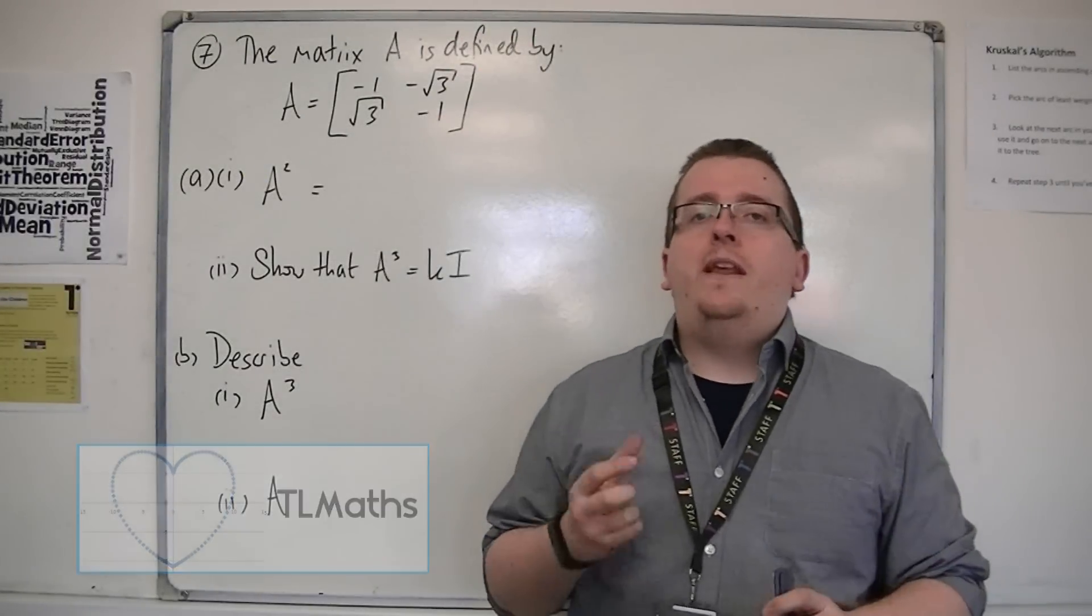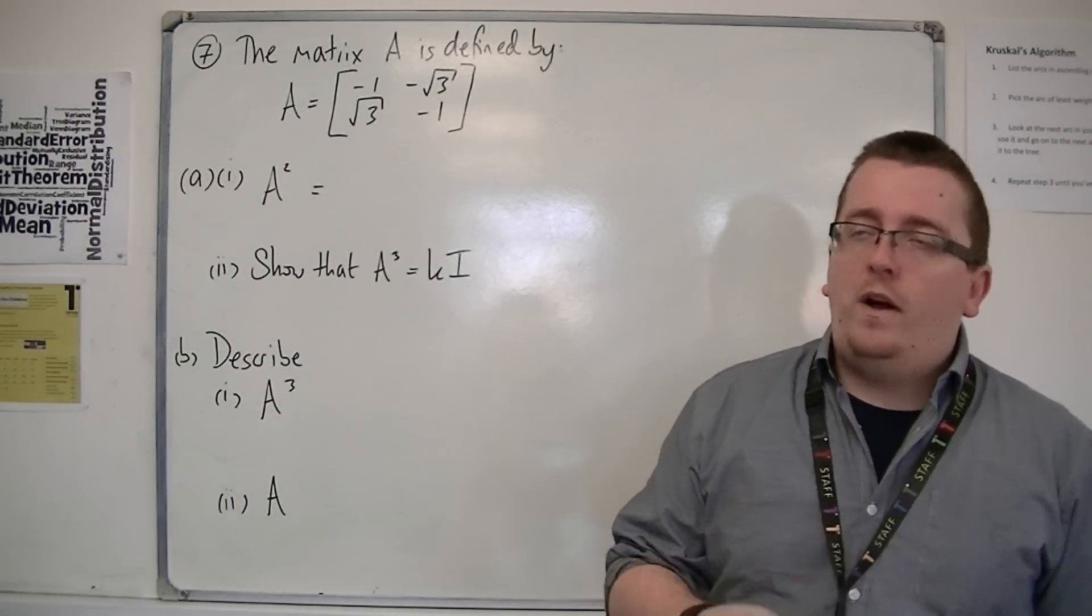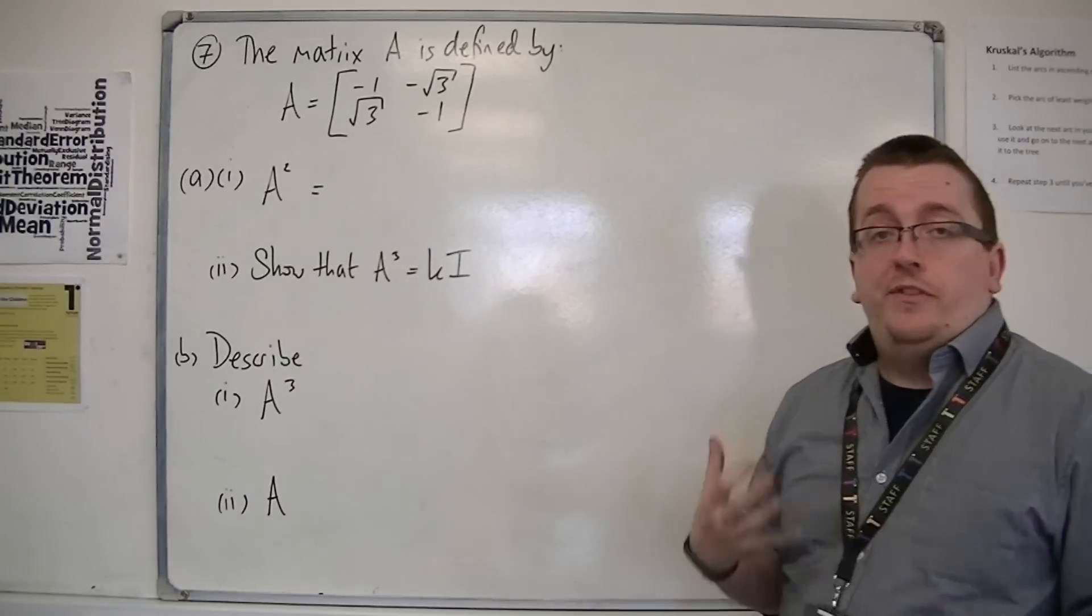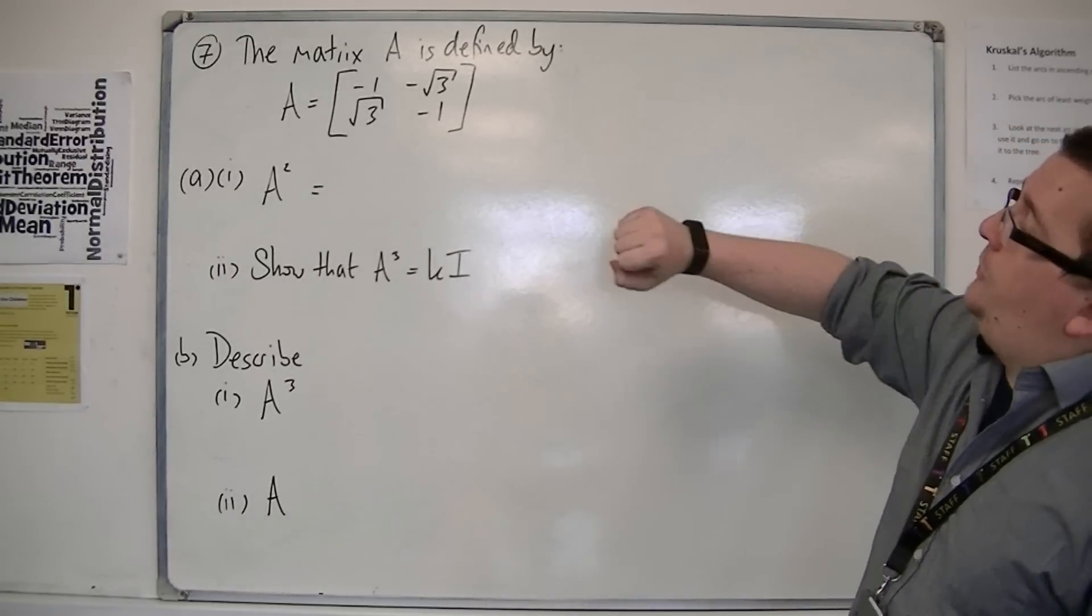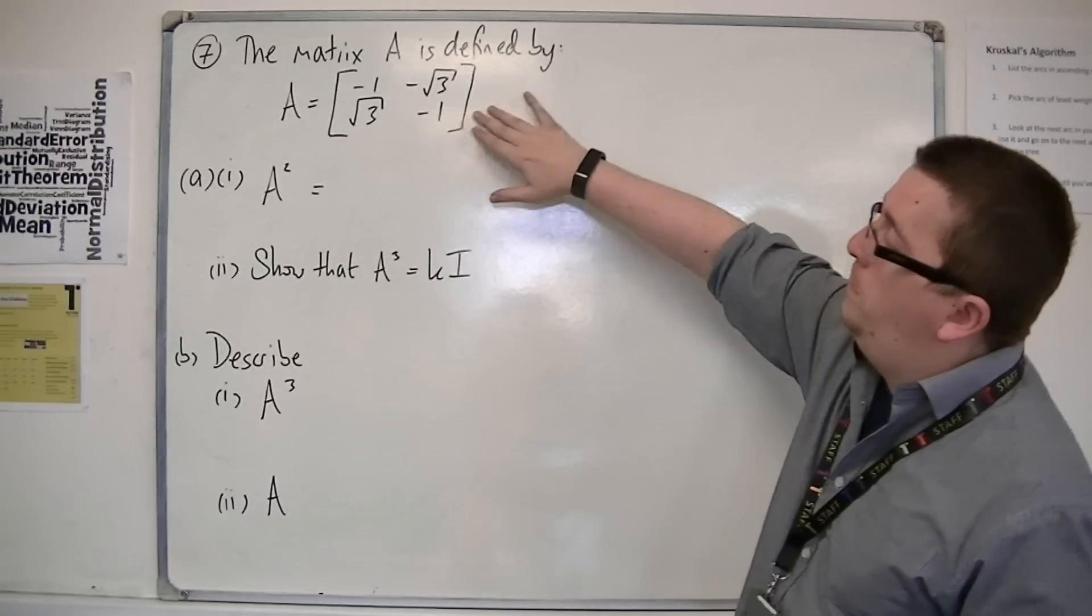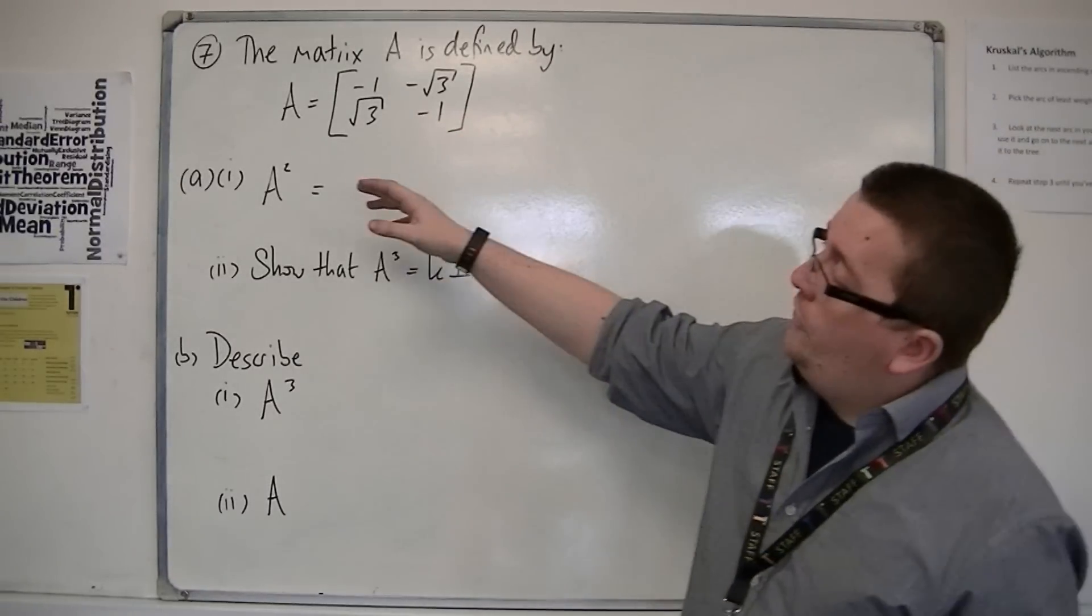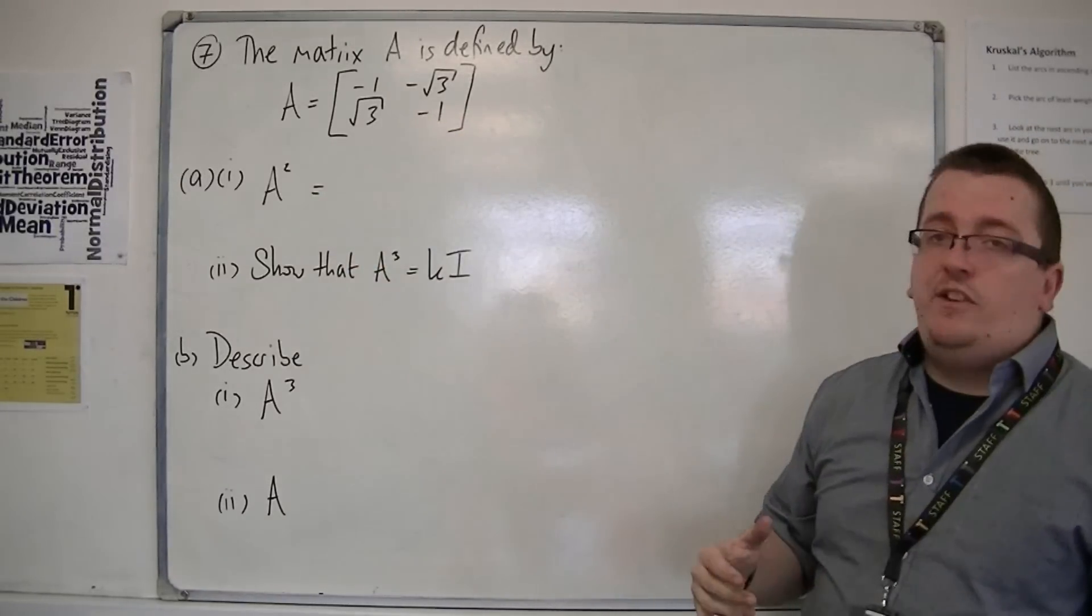OK, this is the June 2011 paper of FP1, and this is question 7. It's the matrices question. And we're given that the matrix A is defined by, well, this 2x2 matrix here, and we're first asked to find A squared.